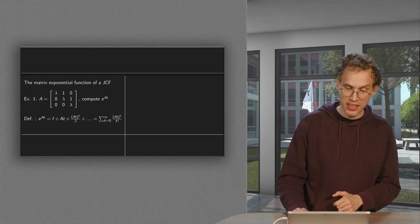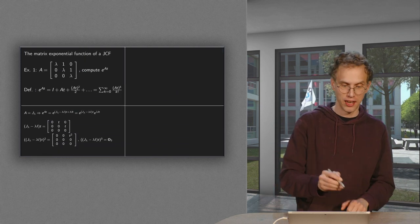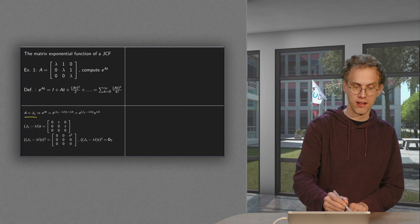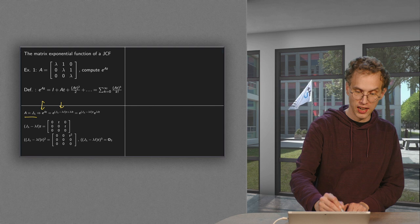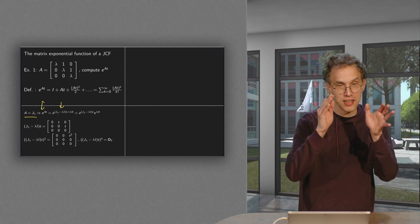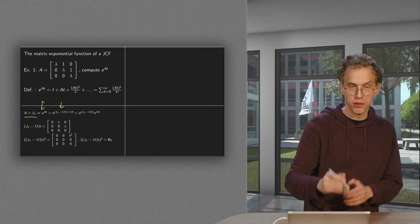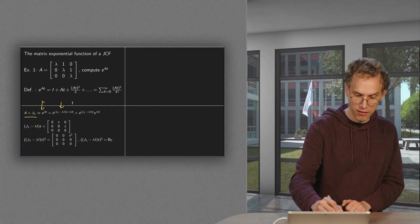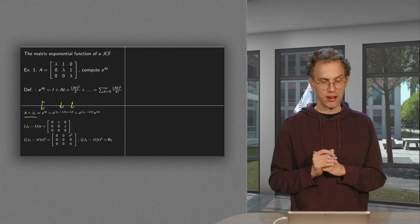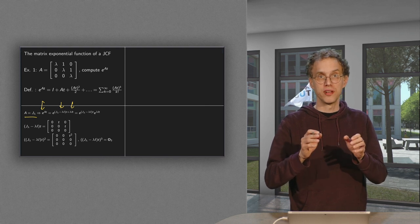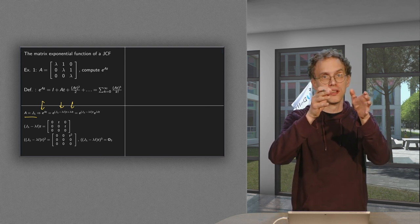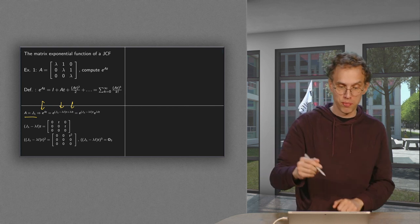However, it is easier to do a small trick if your A equals J lambda. So we want to compute e to the power At. But instead, we compute J lambda minus lambda I times t. And if you subtract minus lambda I, you have to add a lambda I over here. And why do we do that? Well, if you have e to the power a plus b, then you can write it as e to the power a times e to the power b.